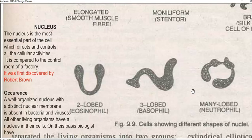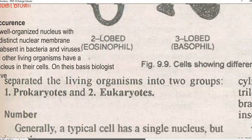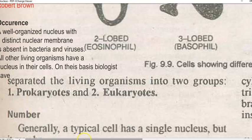If you look at a factory, the control room is the most important part of the factory; the nucleus is the most important part of the cell. It was first discovered by Robert Brown. The next point is related to the occurrence — how it is present in nature. A well-organized nucleus with a distinct nuclear membrane is commonly absent in bacteria and viruses. That is a differentiating feature between these two broad groups of organisms, that is prokaryotes and eukaryotes.